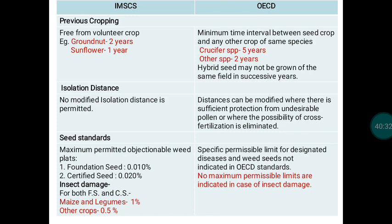Regarding field operations: in IMSCS, land selection requires that the selected land should not have been cultivated with any other variety of the same crop in the previous season, to ensure the field is free of volunteer plants. In the OECD scheme, similar rules apply — for crucifer species, the field should not have been cultivated with any crucifer species for the previous five years; for other species, two years; and hybrid seeds may not be grown on the same field in successive years.